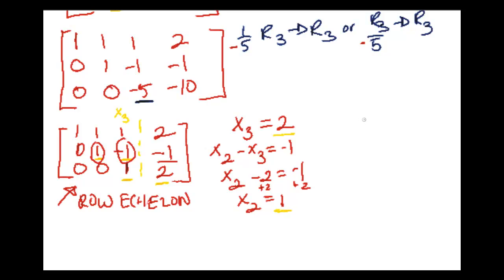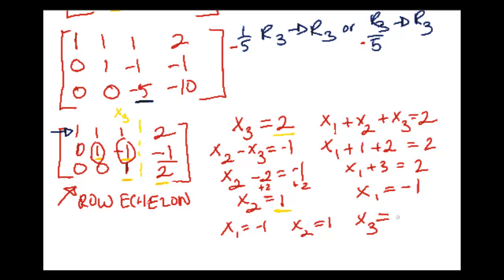So we have 2 of the 3 solutions. Now let's find the third. Using the top row, I have x1 + x2 + x3. That all came from this top row right here, and then that equals 2. Plug in the two values that I do know: I have a 1 for x2 and a 2 for x3. Combine those, move it to the other side, and we get -1.